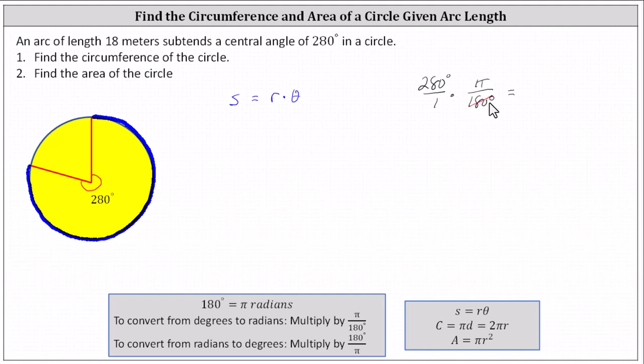180 divided by 20 is equal to nine. 280 divided by 20 is equal to 14, which indicates 280 degrees is equal to 14 pi divided by nine radians.